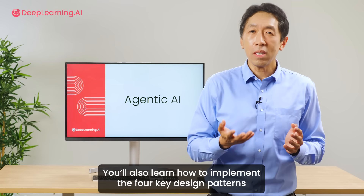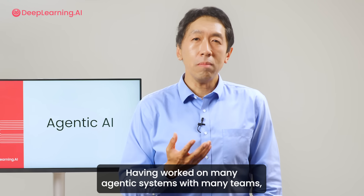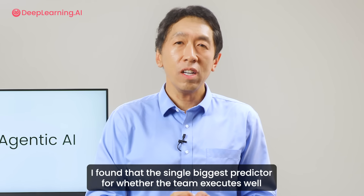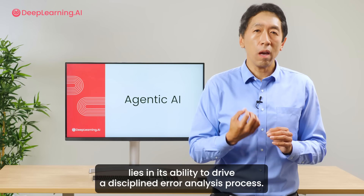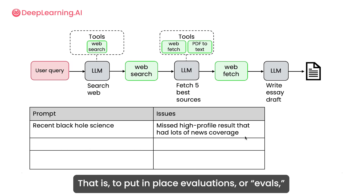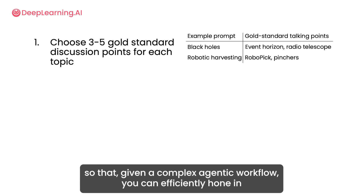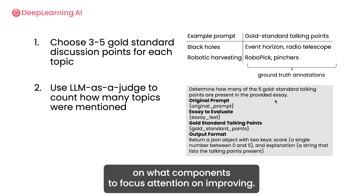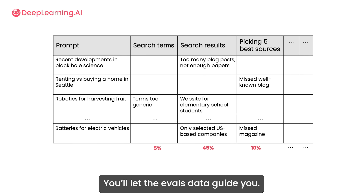You also learn how to implement the four key design patterns for agentic workflows. Having worked on many agentic systems with many teams, I found that the single biggest predictor for whether the team executes well lies in the ability to drive a disciplined error analysis process — that is, to put in place evaluations or evals so that given a complex agentic workflow, you can efficiently hone in on what components to focus attention on improving. This way, you aren't just guessing how to spend time productively — you let the evals data guide you.